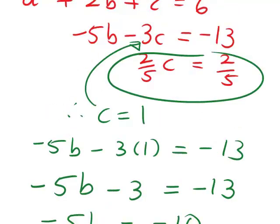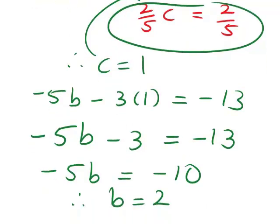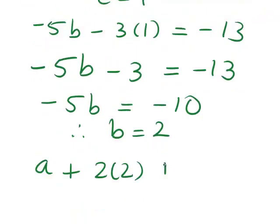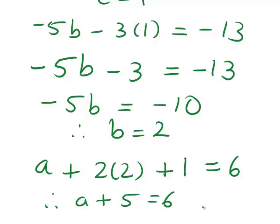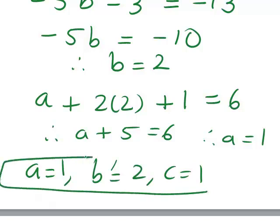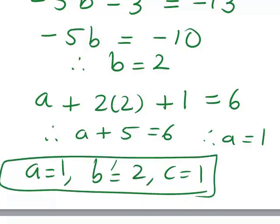We now substitute B equals two and C equals one into the first equation: A plus two times two plus one equals six. That becomes A plus five equals six, therefore A equals one. So we have found that this system of equations has a unique solution: A equals one, B equals two, C equals one. That is the solution of this system of equations using Gaussian elimination.